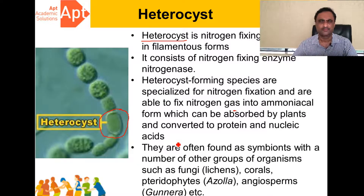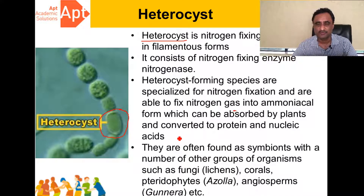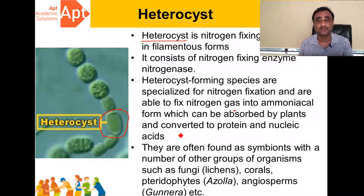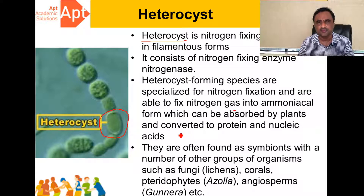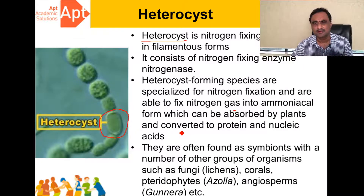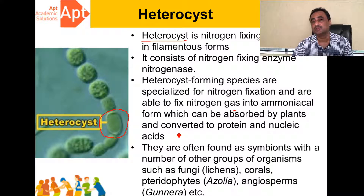Cyanobacteria can exist in a free-living form as well as in symbiotic forms. For instance, in the coralline roots of Cycas, Nostoc undergoes symbiotic association and fixes atmospheric nitrogen. Similarly, there are a large number of species that fix atmospheric nitrogen asymbiotically, and commercially they are also utilized for the production of biofertilizers.